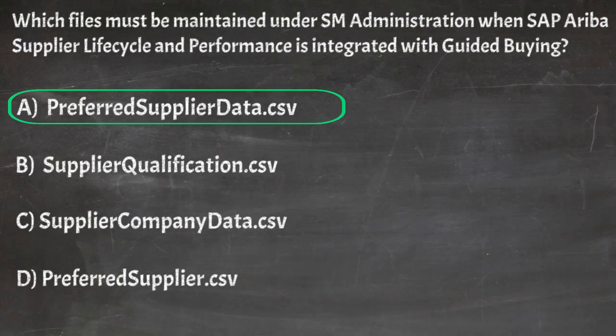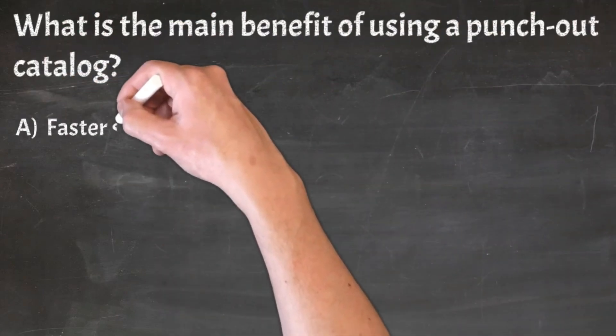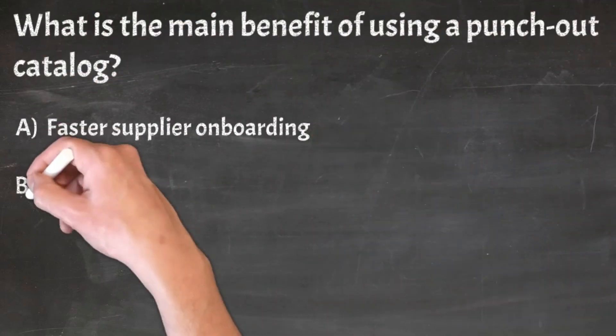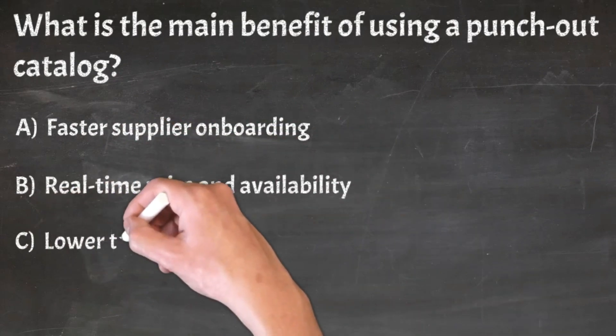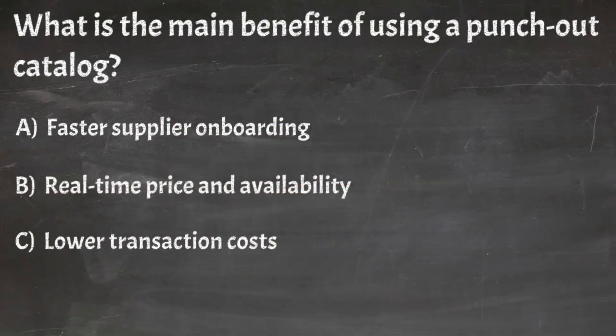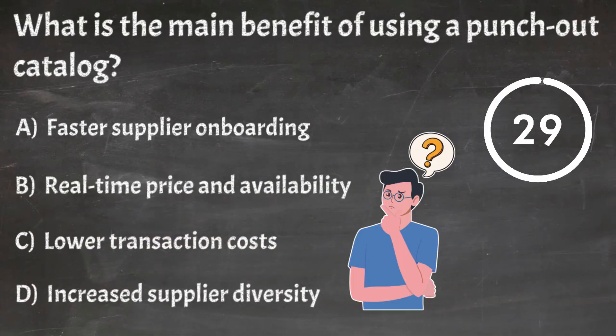Correct answer: A. PreferredSupplierData.CSV. Question 15: What is the main benefit of using a punch-out catalogue? A. Faster Supplier Onboarding, B. Real Time Price And Availability, C. Lower Transaction Costs, D. Increased Supplier Data.